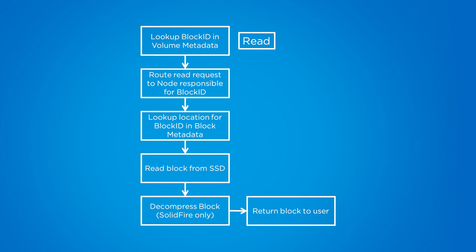If we look at the XtremIO and SolidFire data paths, we can notice some differences. For reads, the first lookup is to find the block ID in the volume metadata. This gives us the mapping of the block ID to the node. We then route that read request to the node responsible for the block ID. The location gets looked up in the block metadata and the block is read from SSD. In the case of SolidFire, we decompress the block and send the result back to the user.